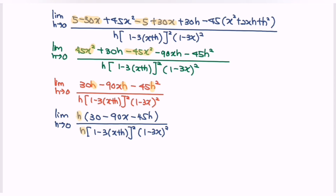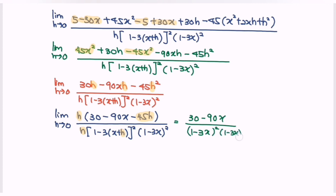Next, substitute the value h equals 0. Here h becomes 0, so we will have 30 minus 90x over 1 minus 3(0), and substituting h equals 0 gives us the denominator 1 minus 3x bracket squared, multiplied with 1 minus 3x bracket squared, giving 1 minus 3x to the power of 4. The numerator becomes 30 minus 90x.